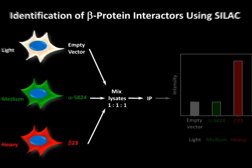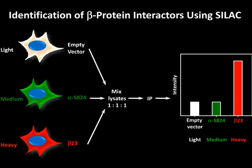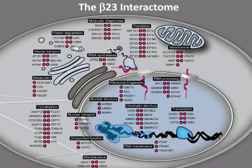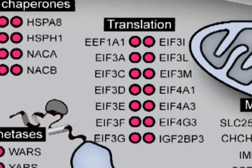Immunoprecipitation followed by mass spectrometry identified approximately 100 cellular proteins to be associated with the beta-23 aggregates. The interactors are located in the cytosol, nucleus, and mitochondria, suggesting multifunctional impairment. For example, a number of translation initiation factors were sequestered in the aggregates, resulting in impaired protein synthesis.